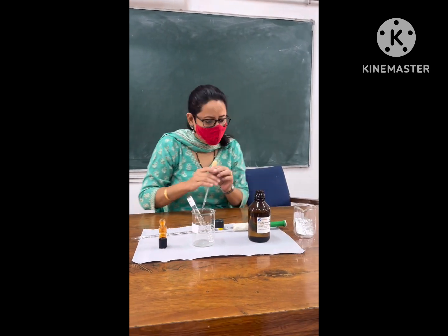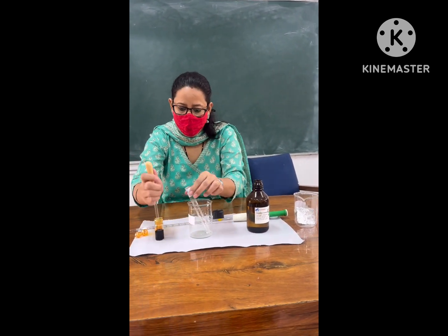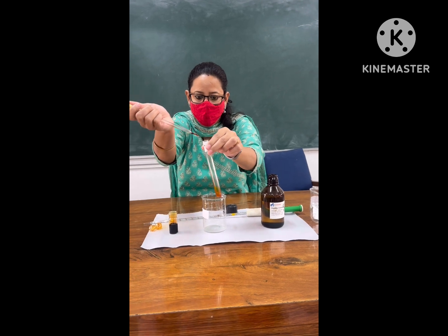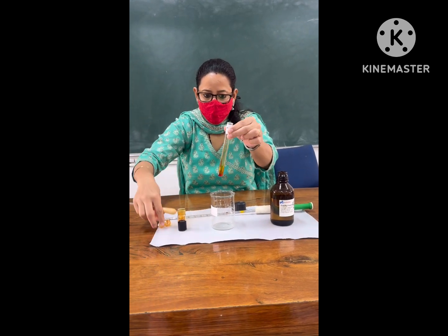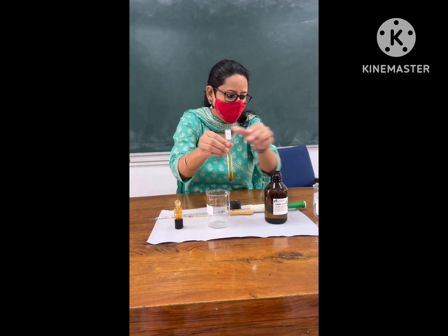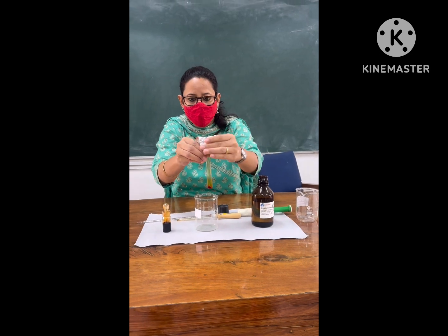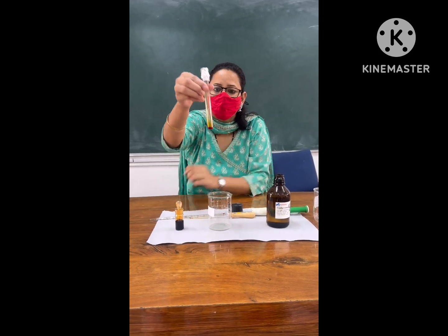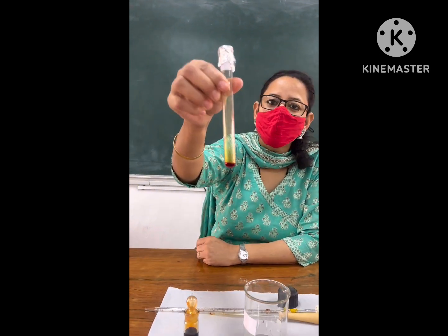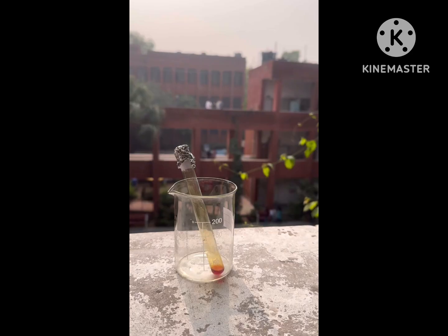To this, bromine solution is added drop-wise till we get a permanent orange color. Now this test tube or boiling tube is covered with an aluminum foil as you can see. So our reaction is ready.